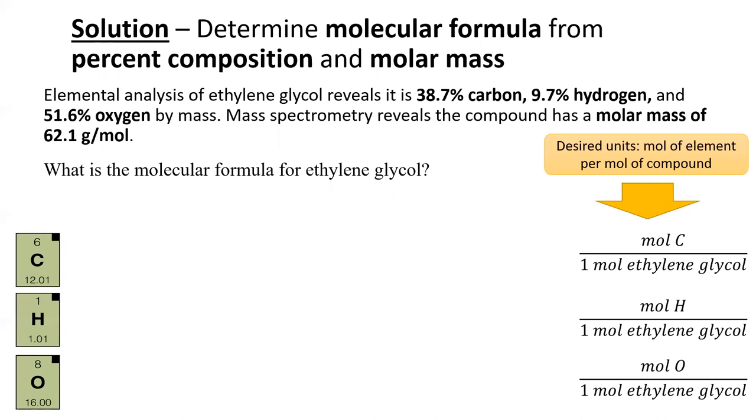Here's how to solve it. We are looking for the molecular formula, which is the number of atoms of each element in one molecule of the compound. It's also the number of moles of each element in one mole of this compound. So our goal is to find moles of carbon per mole of ethylene glycol, moles of hydrogen per mole of ethylene glycol, and moles of oxygen per mole of ethylene glycol.